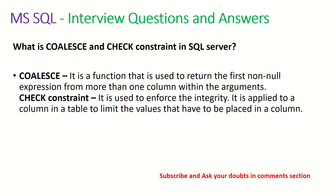What is COALESCE and check constraint in SQL Server? COALESCE is a function used to return the first non-null expression from more than one column within the arguments. Check constraint is used to enforce integrity — it is applied to a column in a table to limit the values that can be placed in that column.